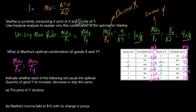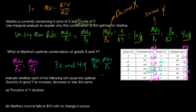The fourth unit of Y provides 2 utils per dollar, and the third unit of X also provides 2 utils per dollar. Together they cost $6, which is exactly her remaining budget. She has now spent all $20. The optimal combination is 3 units of X and 4 units of Y, where MU_X / P_X equals MU_Y / P_Y, both equal to 2 utils per dollar. Martha should buy 3 units of good X and 4 units of good Y — that's where marginal utility per dollar is equalized and her entire $20 budget is exhausted.